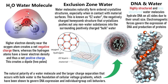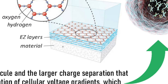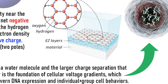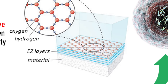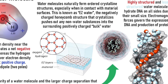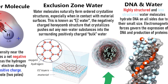These are called hydrogen bonds when they connect via these charge differences. Water molecules naturally form an ordered crystalline structure, especially when in contact with material surfaces. If you have some sort of surface here — let's say this is the outside of a cell, it's a cell membrane — then you will form these layers of water with a crystalline structure. This is known as EZ water, the EZ standing for exclusion zone. This negatively charged honeycomb structure crystallizes and pushes out any non-water substances into the surrounding water, which is called bulk water.